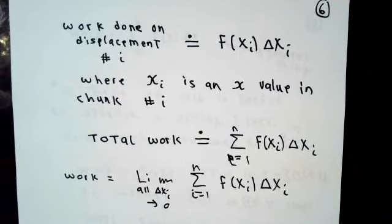And to get the exact value of the work, we take the limit of these Riemann sums as all of the delta xi's tend to zero. If you've been following along, you recognize what we're going to do here.